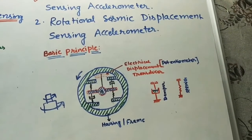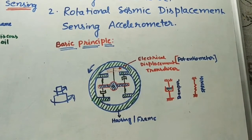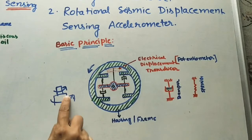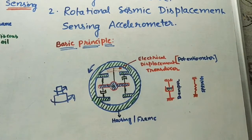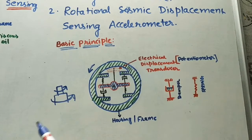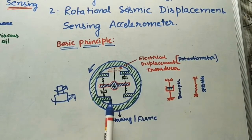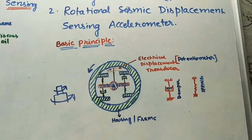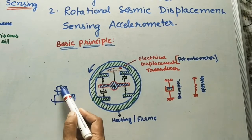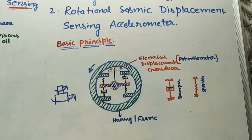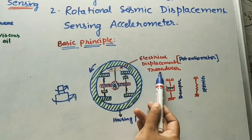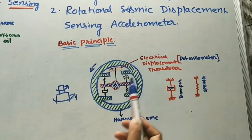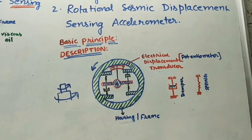In the basic principle, we take some mass and keep the meter or accelerometer on a rotating object. This is the accelerometer — it is very small in size. This is our machine; it is rotating and the meter is also rotating. Whatever vibrations are there, because of those vibrations the mass will displace and vibrate. The displacement of this mass, because of the rotation of the accelerometer, will be measured by the electrical transducer, which gives the vibrations of the given machine.